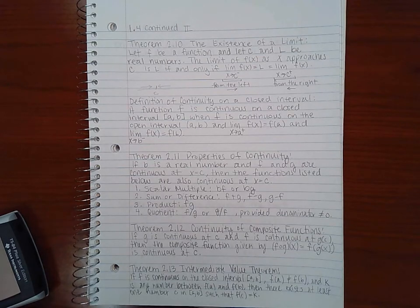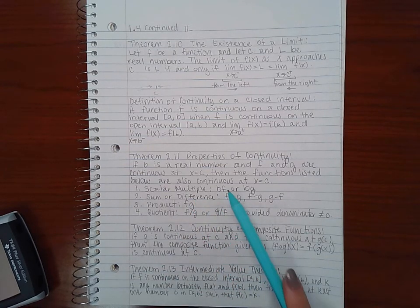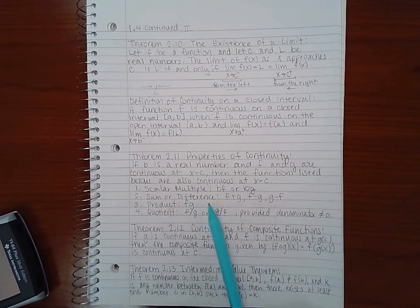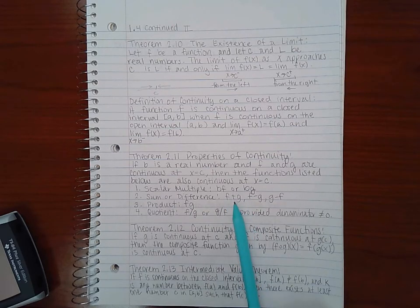So, theorem 2.11 is the properties of continuity. If b is a real number and f and g are continuous at x equal to c, then the functions listed below are also continuous at x equal to c. A scalar multiple, b times f or b times g. The sum or difference, f plus g, g plus f is the same, f minus g, g minus f, all of those are also continuous.